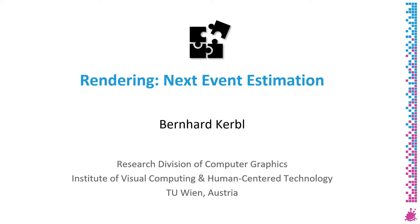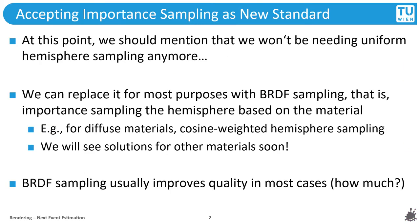Welcome to this new lecture where we will discover and apply a method called next event estimation to improve the quality of our renderings. Previously we saw how we can use importance sampling to create samples on the hemisphere in such a way that we can cater to the needs of the BRDF — that is, we can preferably sample directions from which we expect a lot of contribution to the reflected radiance at the surface point, depending on its material properties. We already derived how to do this for perfectly diffuse materials and ended up with cosine weighted hemisphere sampling.